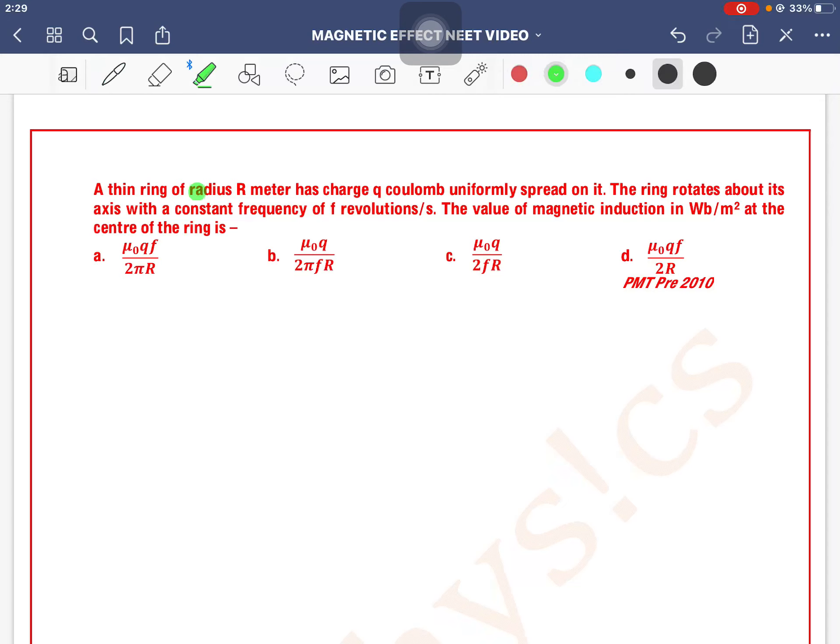A thin ring of radius R meter has a charge Q coulomb. The ring rotates about its axis with a constant frequency of f revolutions per second. The value of magnetic induction at the center of the ring is magnetic induction at the center of the ring.